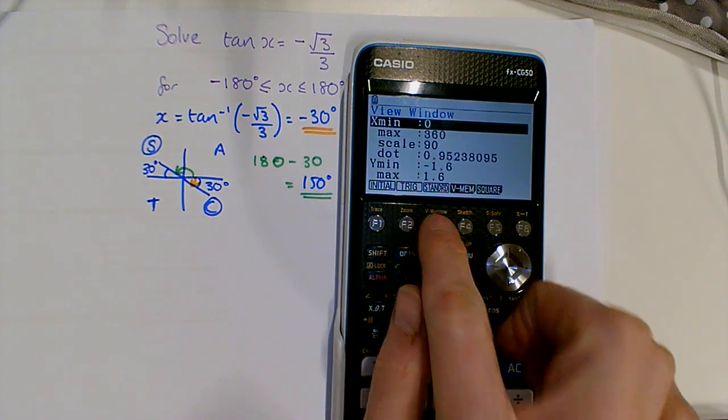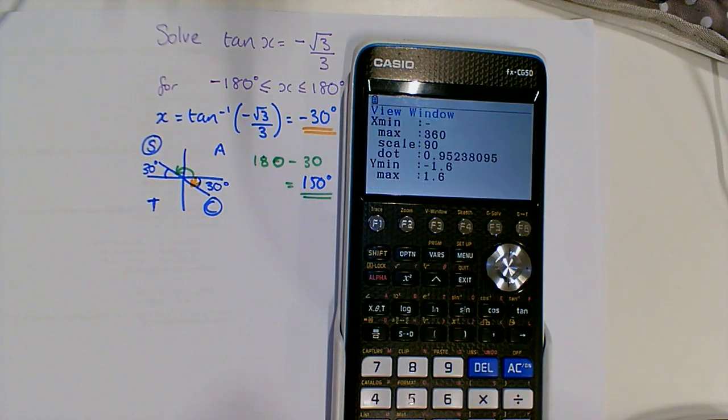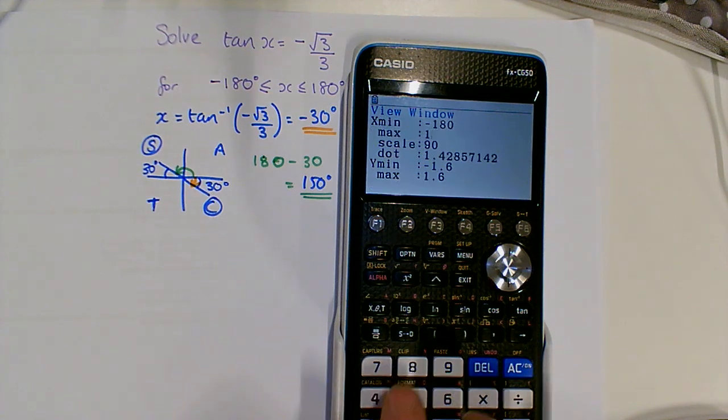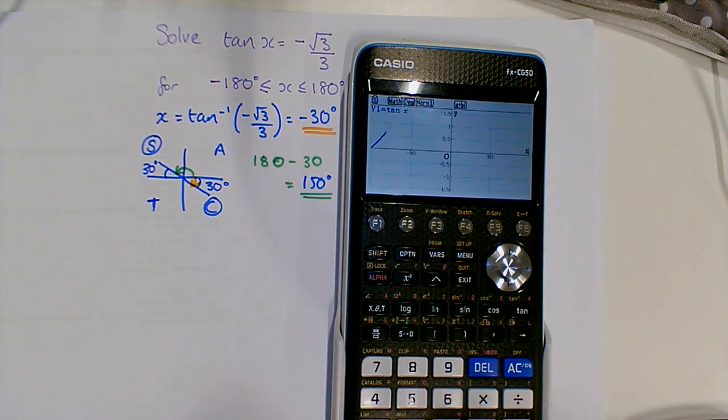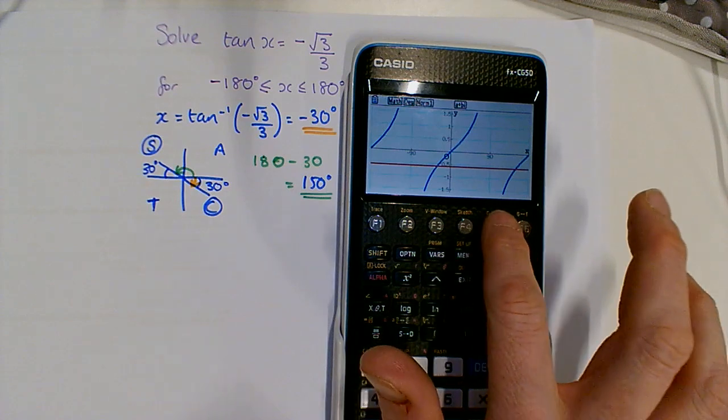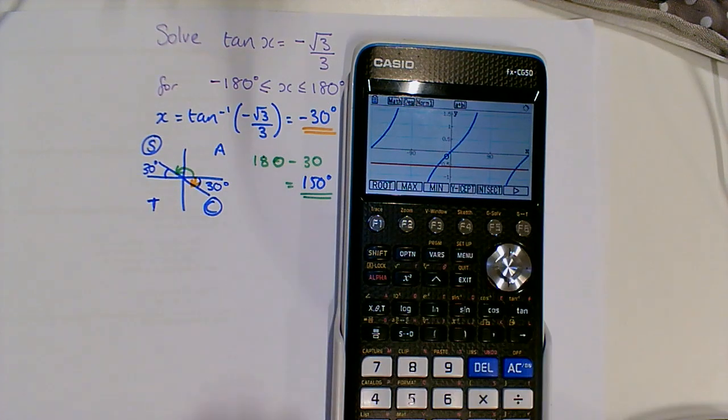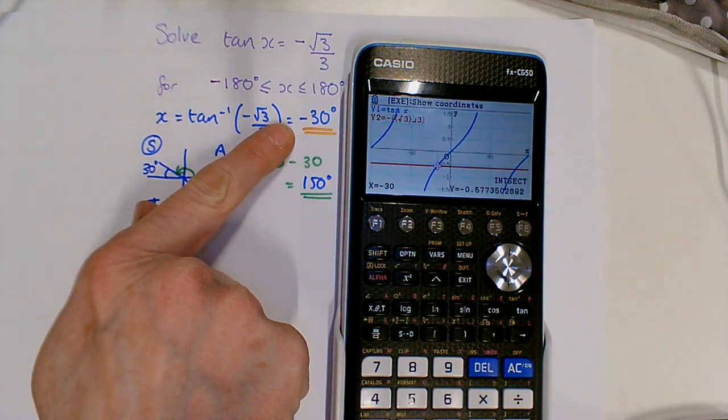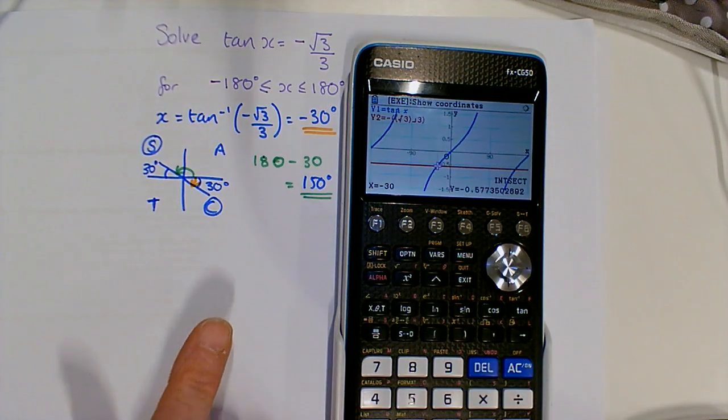So we go view window and we change the x range to go from minus 180 to 180, then we draw. We do g-solve and intersect, and we get our minus 30 and the other one was the 150.